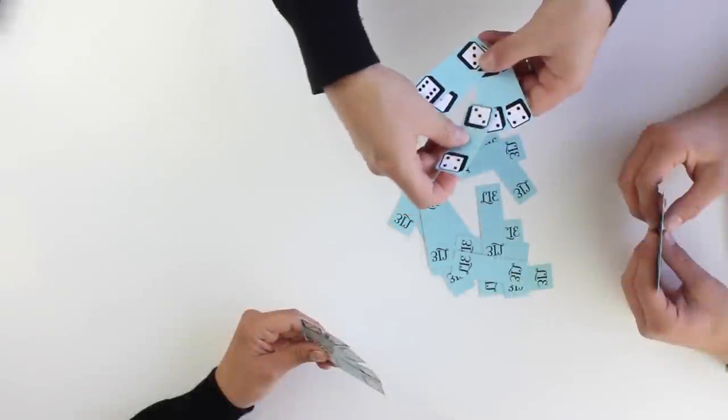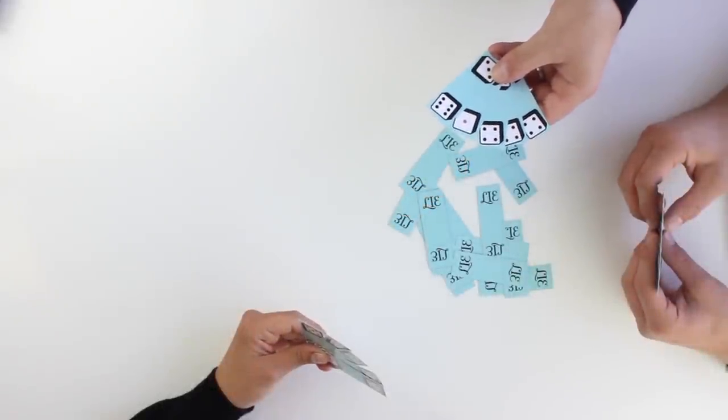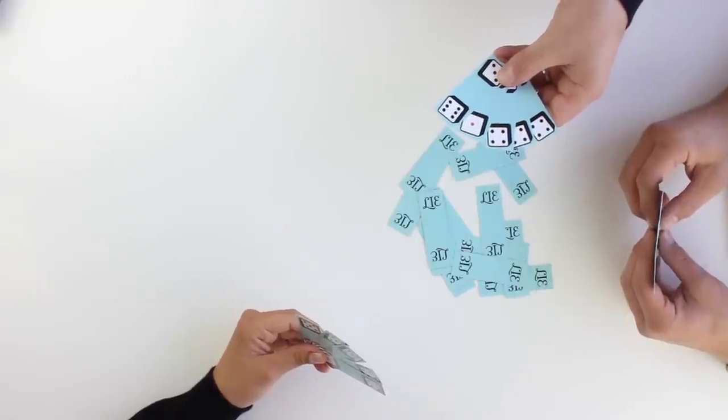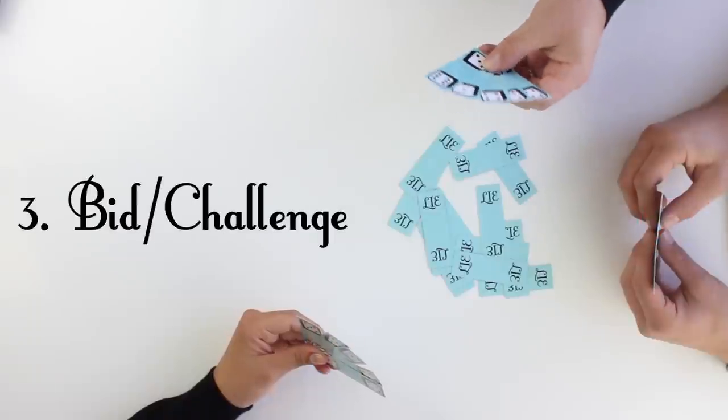A player makes this choice for each card they hold and signifies this by rotating each card so that the chosen die is on top as they look at it vertically. Once all players have chosen, the bidding starts and the orientation of the cards may not be changed. The third step in each round is the bidding and challenge phase.